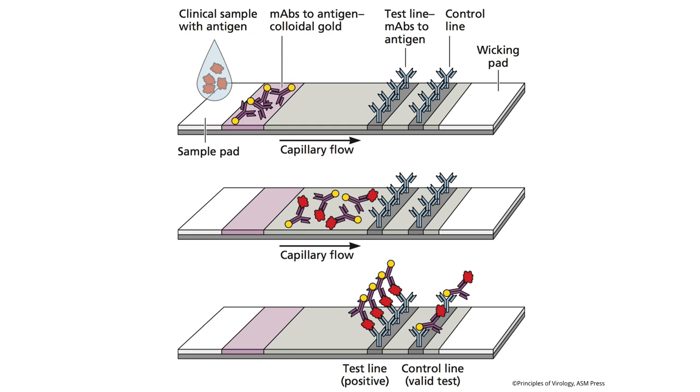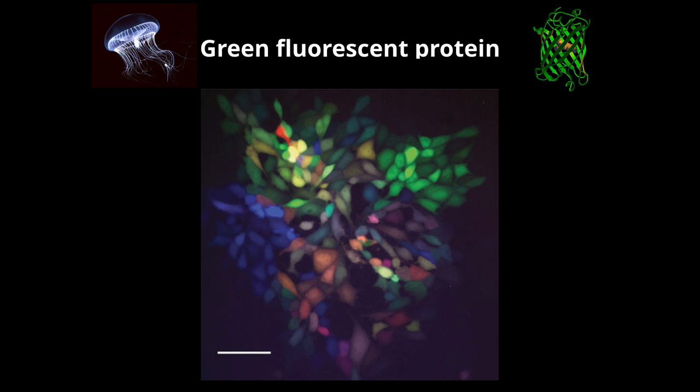We can also measure viruses by incorporating reporter genes into their genomes that produce visible signals. Here's an example using green fluorescent protein. Marty Chalfie was the first to show you could take the GFP gene from jellyfish and express it in an organism — he used C. elegans, and for that received the Nobel Prize. Now you can put it into any organism, including viruses.